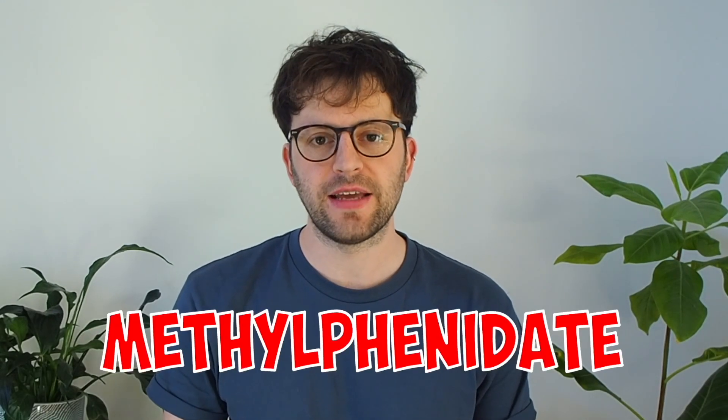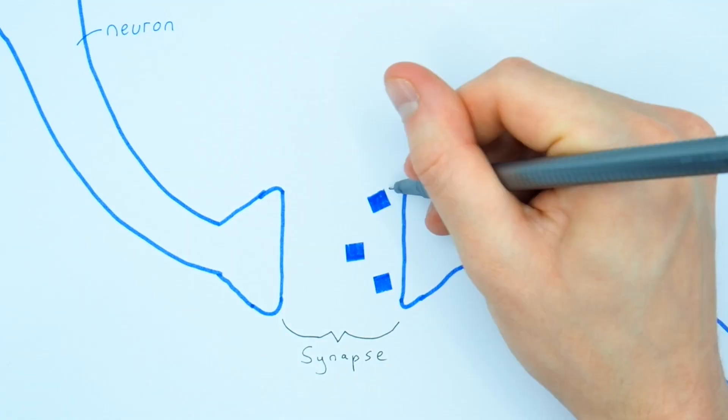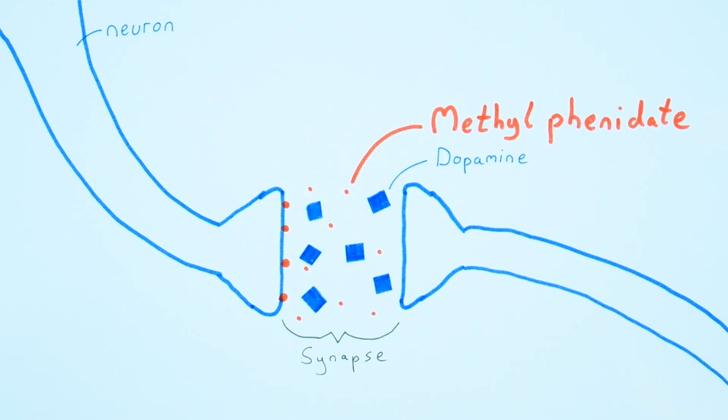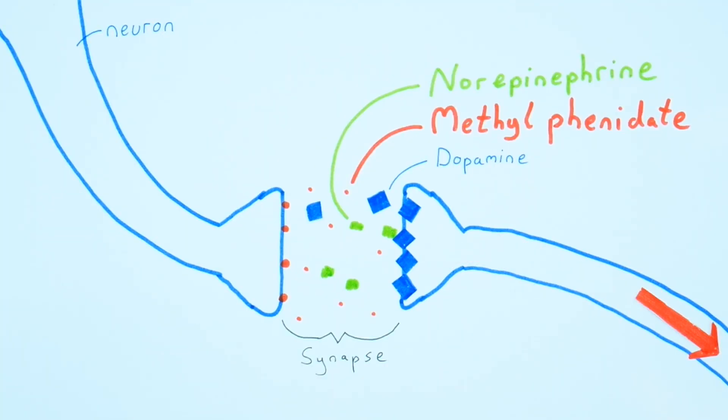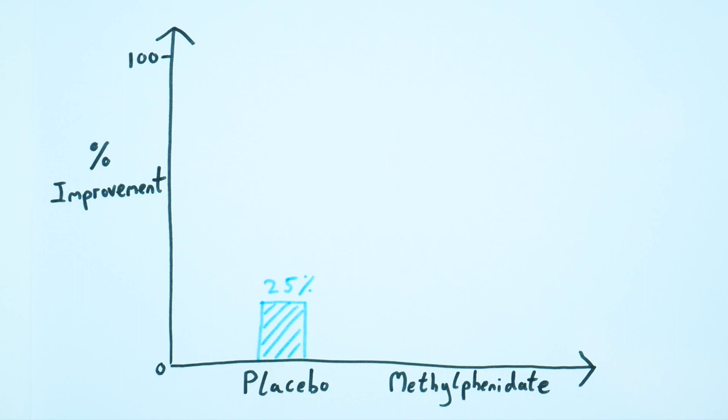The most common drug used to treat ADHD is methylphenidate, which is a stimulant. If we go back to our neurons which release and detect dopamine, methylphenidate increases the quantity of dopamine and norepinephrine — or noradrenaline if you're British. More dopamine causes more signals to be sent forward in the next neuron, which does relieve symptoms of ADHD. This huge meta-analysis brought together data from over 10,000 children and 9,000 adults to demonstrate that placebo drugs led to a roughly 25% improvement in symptoms of ADHD, and stimulants like methylphenidate led to a roughly 60% improvement. But there was high variability, very mixed results, mixed methods, and not all of the studies were double-blinded.